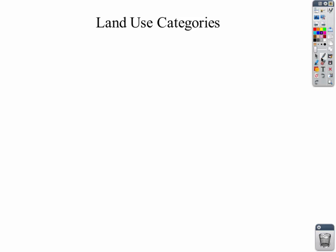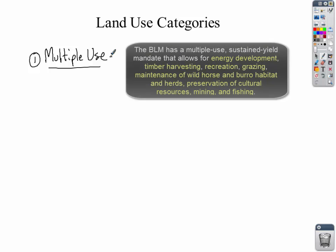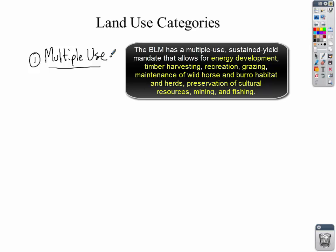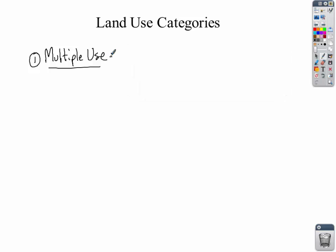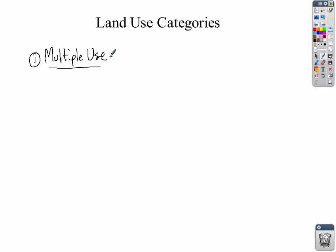Let's talk about the categories used to classify our public lands. The first is called multiple use — land used for many different purposes at the same time. For example, you might have a forest that's used to protect an animal's habitat, but at the same time a company is allowed to come in and log timber on that property. You're torn between two different uses — conservation and logging — and these purposes often clash and become very controversial.